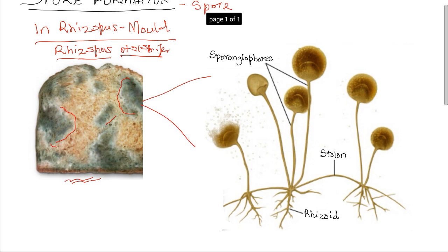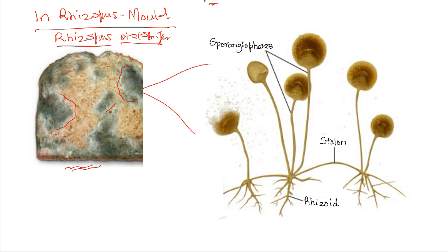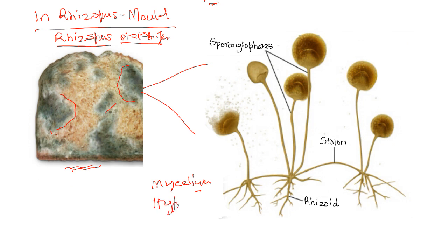If you magnify that, you see that the body of the Rhizopus is known as mycelium. The mycelium consists of a network of branched filaments known as hyphae.